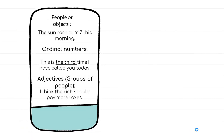When we refer to people or objects that are unique, we use the definite article — for example, 'The sun rose at 6:17 this morning,' because the sun is unique. When talking about ordinal numbers, which indicate position or order, we use the definite article — for example, 'This is the third time I have called you today.' When using adjectives to talk about groups of people, we also use the definite article — for example, 'I think the rich should pay more taxes,' because 'the rich' refers to a group.